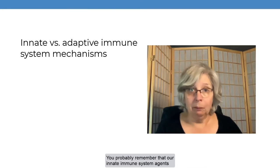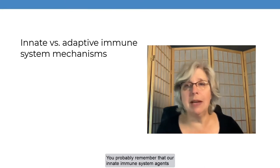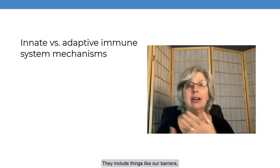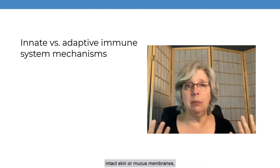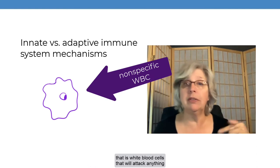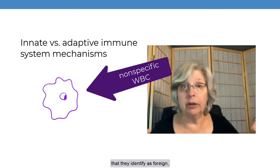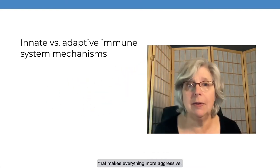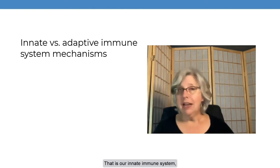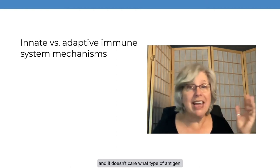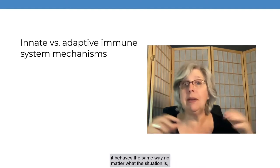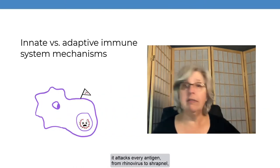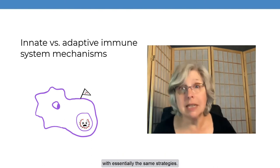You probably remember that our innate immune system agents are mechanisms and cells that we are born with. They include things like our barriers — intact skin or mucous membranes — also our nonspecific white blood cells, that is, white blood cells that will attack anything that they identify as foreign, along with all the inflammatory chemicals that we secrete that make everything more aggressive. That is our innate immune system, and it doesn't care what type of antigen is present. It behaves the same way no matter what the situation is, attacking every antigen — from rhinovirus to shrapnel — with essentially the same strategies.